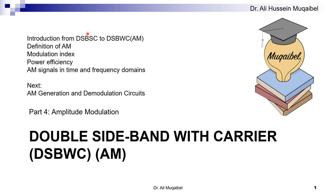Why do we go from double sideband without carrier to double sideband with carrier? We'll go on to the basic definition of AM, and we'll look at the modulation index and power efficiency. Then we'll look at the AM signal both in time and in frequency domain. Later on in coming videos, we'll see how to generate and demodulate AM signals.